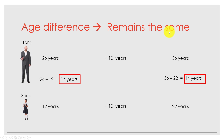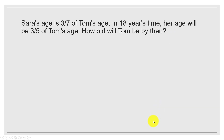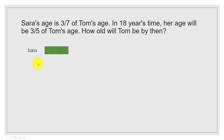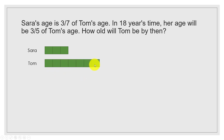The question is: Sarah's age is 3 over 7 of Tom's age. In terms of ratio, that means the ratio of Sarah's age to Tom's age is 3 to 7. Using the unit method, Sarah's age is represented by 3 units and Tom's age is represented by 7 units.